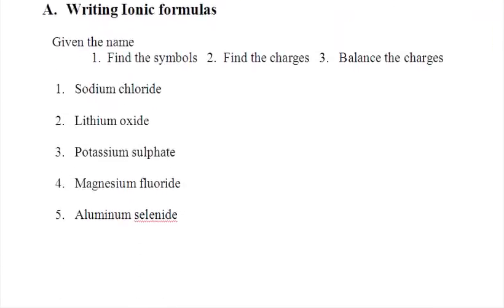We're going to start off by writing ionic formulas. Ionic formulas consist of a metal and a non-metal. So you're going to be given the name. You've got to look up the metal and the non-metal, find those symbols, find the charges that are on your periodic table, and you need to balance the charges, which is the part that is always the trickiest for you. So we'll do a few of these together.